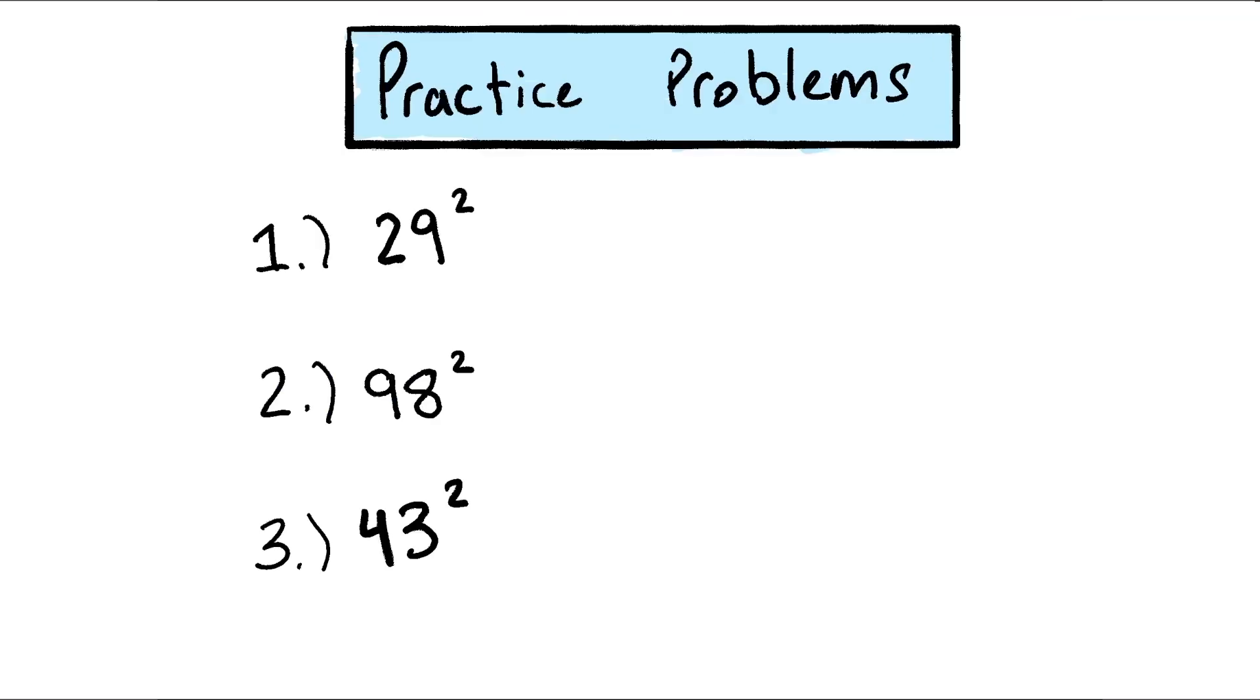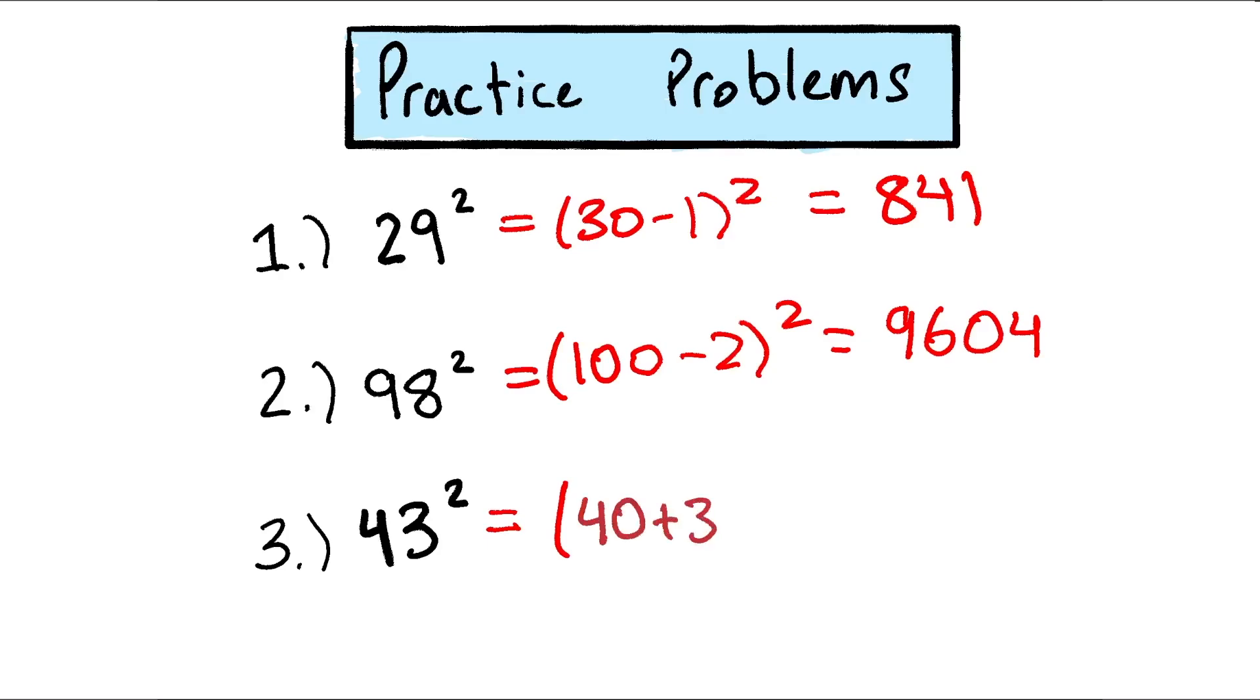So here are some practice problems for you. Pause the video and see if you can figure these out. So for the first one, you want to treat it as 30 minus 1 squared, and that gives you a total of 841. For the second one, you want to treat it as 100 minus 2 squared, which is 9,604. And finally, the 43 squared, we can do 50 minus 7, but we could also do 40 plus 3 squared. That just makes the middle term an add 2ab versus a subtract 2ab. And that will give us 1,849.